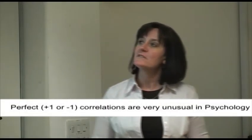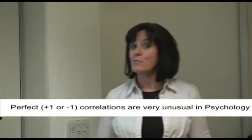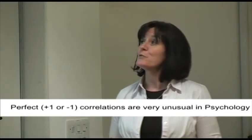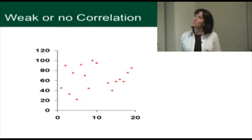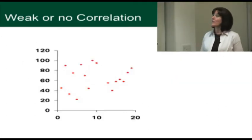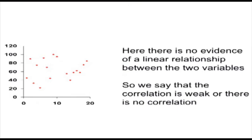Perfect correlations, taking a value of positive one or negative one, are actually really unusual in psychology. So this is a strong negative correlation, but it's not a perfect correlation because the points don't all lie on the line — it might have a value of about 0.6 or 0.7. This scatter plot shows weak or no correlation, and here there's really no evidence of a linear relationship between the two variables.